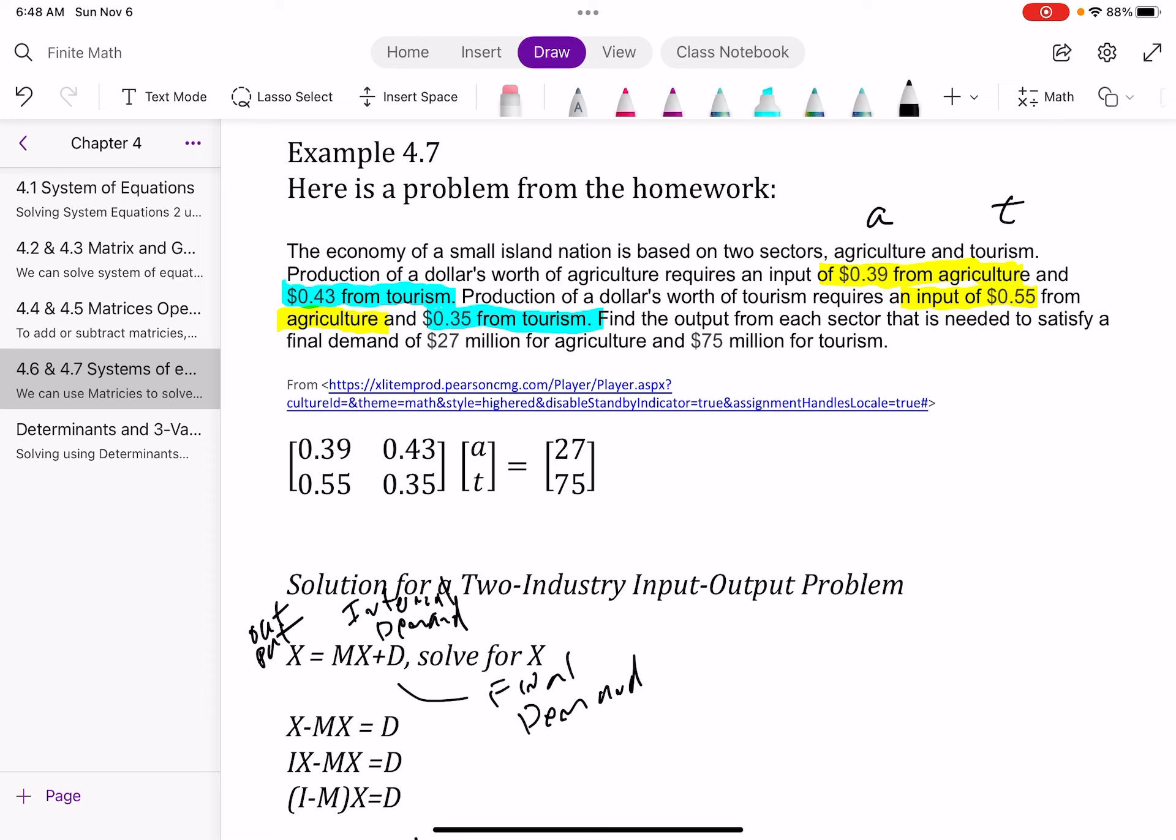So my first equation is agricultural and tourism, right, because remember we multiply going down. So this is 0.39 A and 0.43 T, right? So that's why those go there. And then my 0.55 and 0.35 go together because, again, 0.55 times A, 0.35 times T equals 75. So if I write this out, 0.39 agriculture plus 0.43 tourism equals 27. And 0.55 agriculture plus 0.35 tourism equals 75.